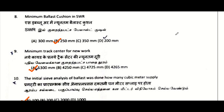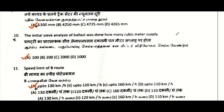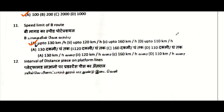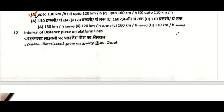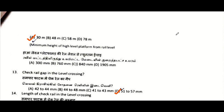Minimum ballast cushion in SWR: 250 mm. All questions are being solved on the basis of the new IRPWM 2020. Minimum track center for new work: 5300 mm. Initial sieve analysis of ballast done by how many cubic meters apply: 100 cubic meters. Speed limit of B route: up to 130 kmph.